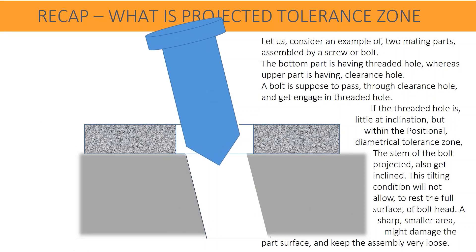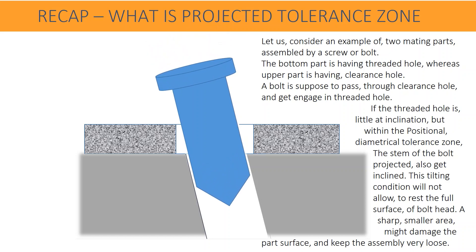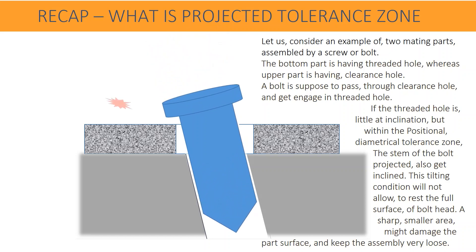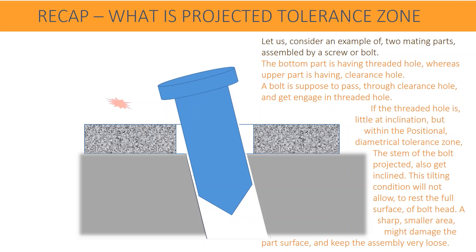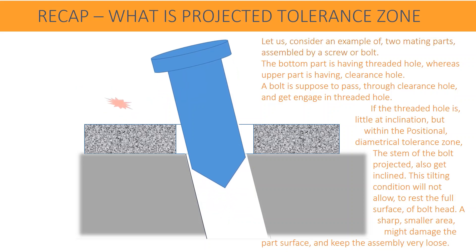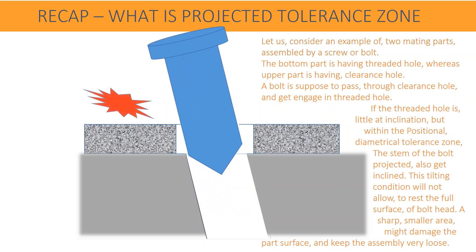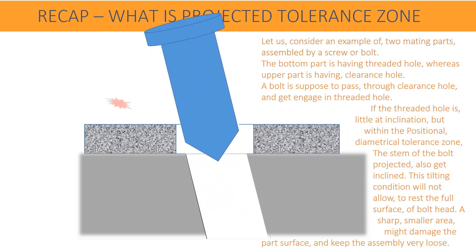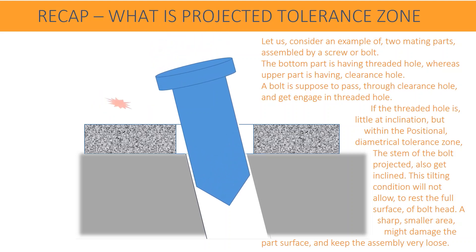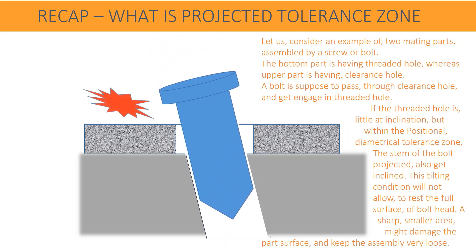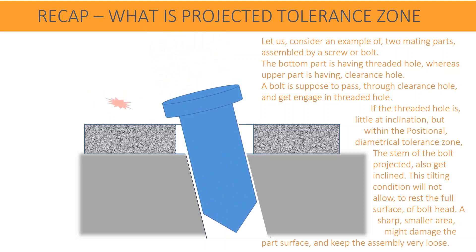Let us consider an example of two mating parts assembled by a screw or bolt. The bottom part is having a threaded hole whereas the upper part is having a clearance hole. A bolt is supposed to pass through the clearance hole and get engaged in the threaded hole.